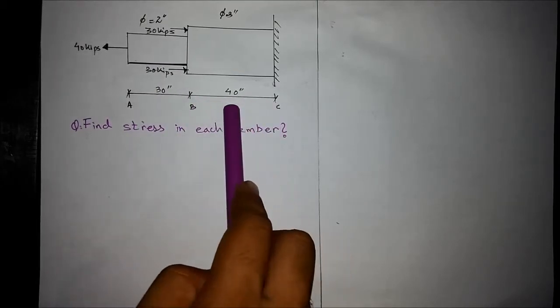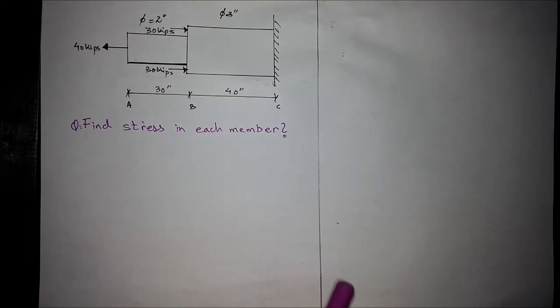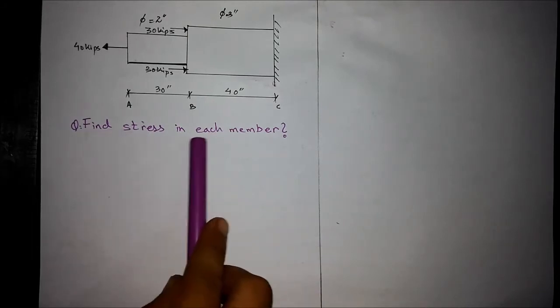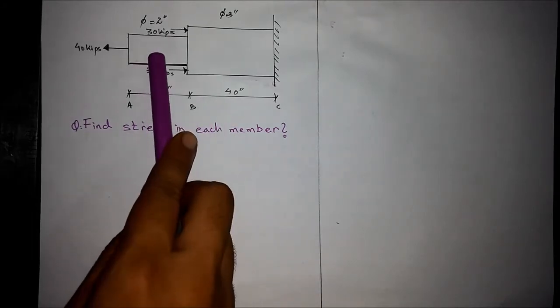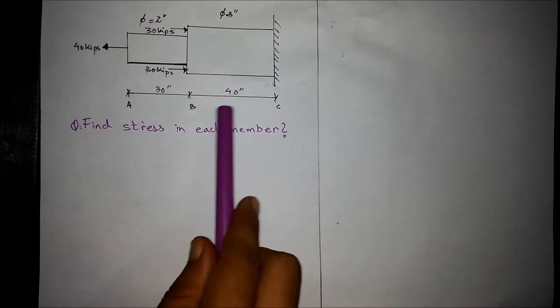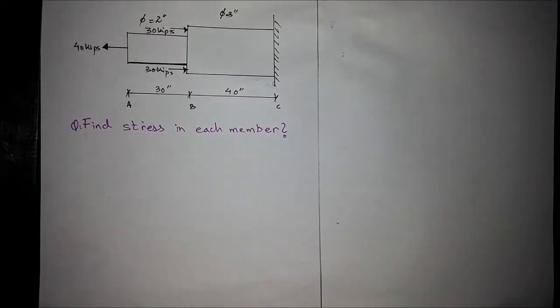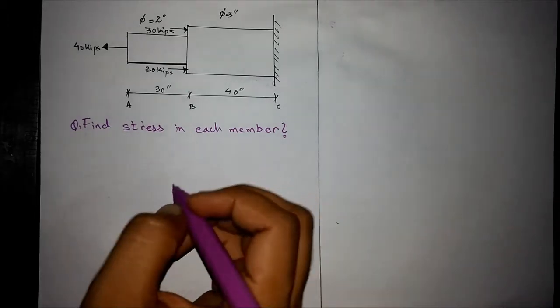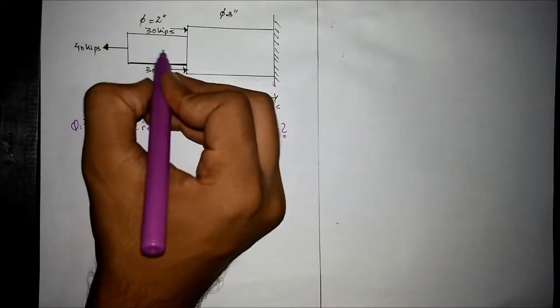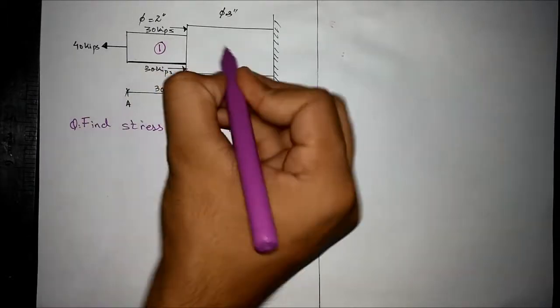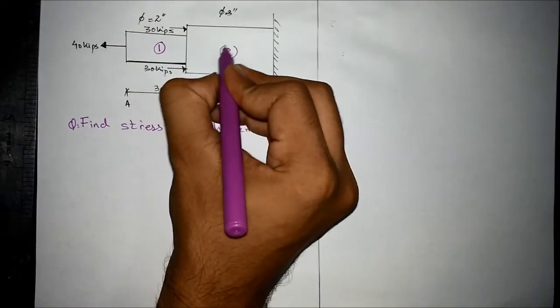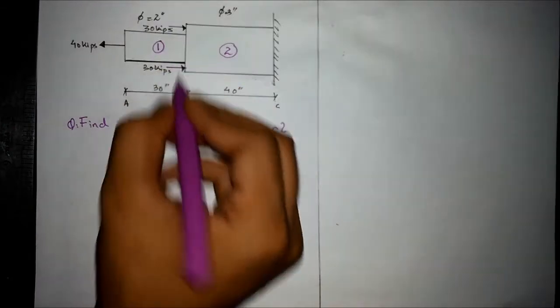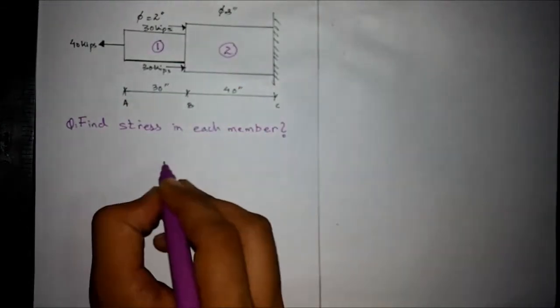We are required to find out the stress in each member, that is member AB and member BC. For finding out the stresses in each member, we first need to draw the free body diagram of member 1 and member 2 individually. For drawing the free body diagram of member 1...